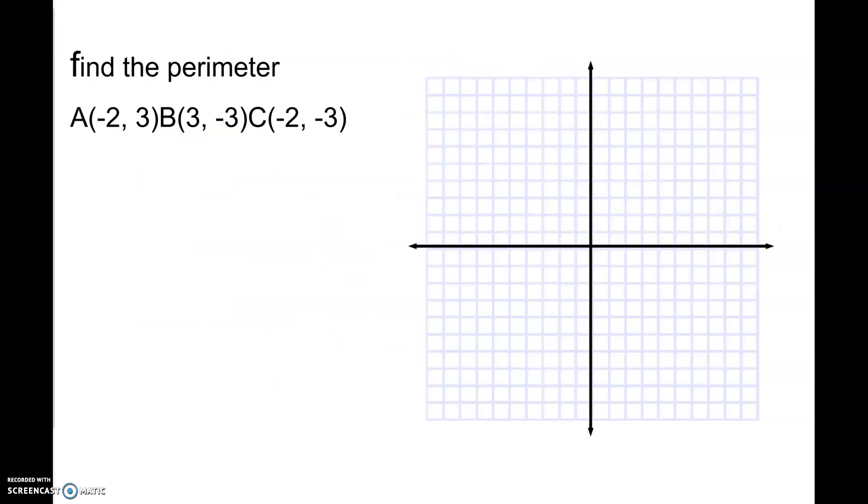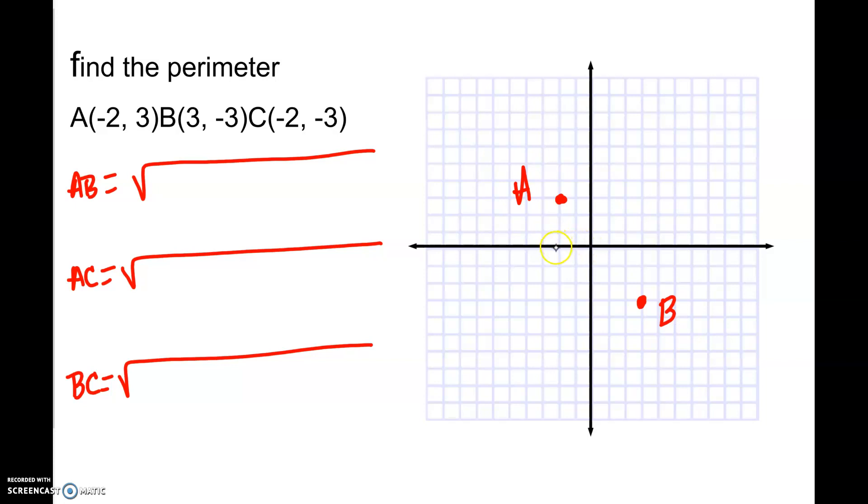So this first one, we're going to find the perimeter of this triangle ABC. Now, you could just find the distance of all three. So you could go AB and you can use your distance formula and find the length of that. You can find the length of AC and find the length of that. And then we have a third side, BC, and we can find the length of that by using your distance formula. Some people like to graph it first to help them get a visual. So we're going to do that. So A is at negative 2, 3. So here's point A. Point B is at 3, negative 3. So B is down here at 3, negative 3. And C is at negative 2, negative 3. So here's where C is at.